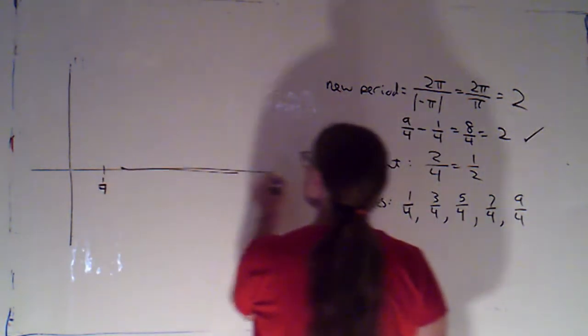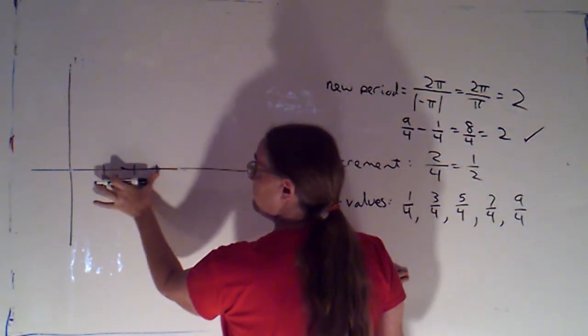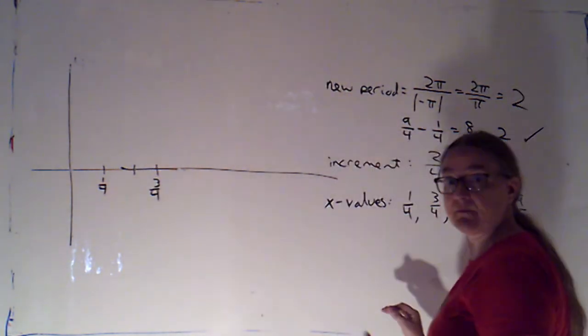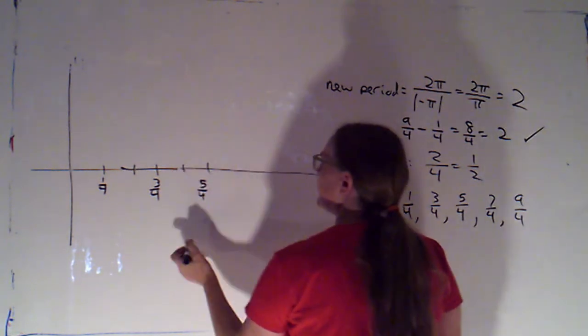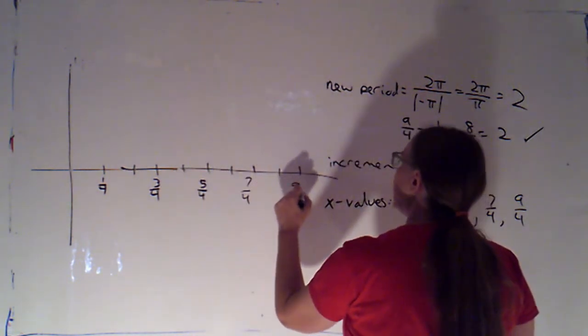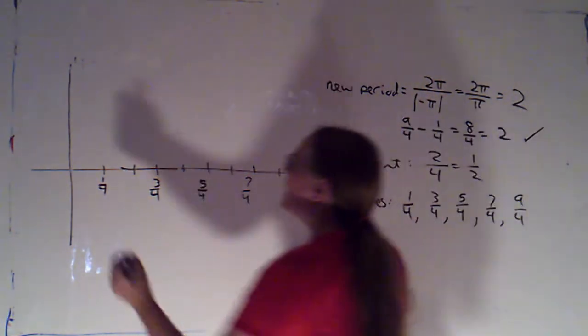So, if I'm saying that distance is 1 fourth, I'm going to say, okay, that's another 2 fourths would be twice as long. That'll take me to 3 fourths, which is my next important point. 4 fourths, 5 fourths, 6 fourths, 7 fourths, 8 fourths, 9 fourths. Those were my important points.